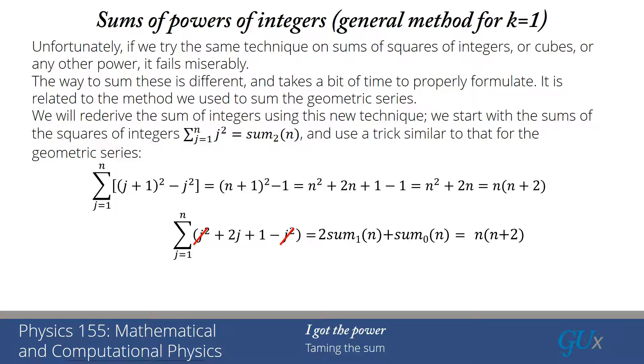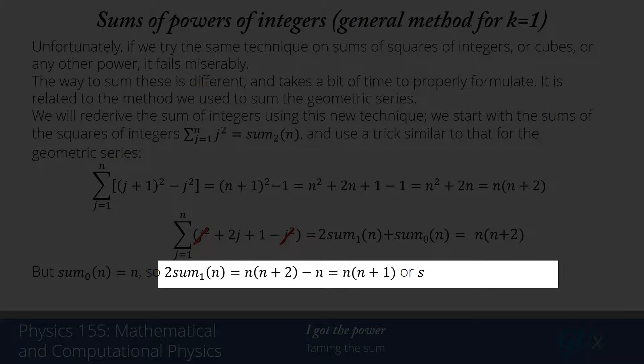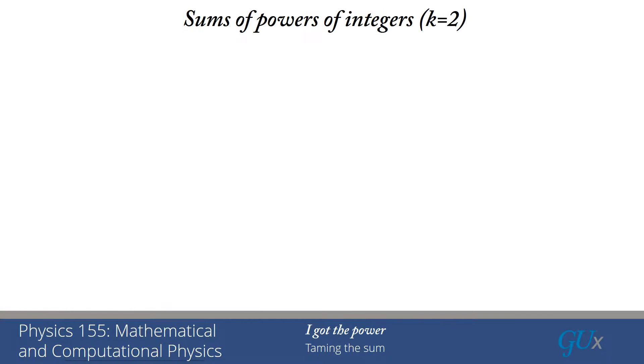And the total is equal to what we calculated before, n times n plus 2. So this means that 2 sum of 1 is equal to n times n plus 2 minus n. You work that out you get n times n plus 1. Or sum 1 of n if I divide by 2 on both sides is equal to 1 half n times n plus 1. And that's the answer that we got before. But now it turns out this method will work for higher powers.